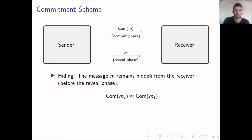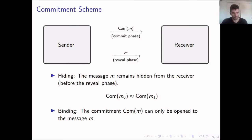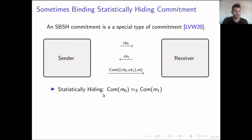We also want the commitment scheme to be binding, meaning after the sender commits to the message M, he can only open to M and cannot trick the receiver by switching messages. Usually, most commitment schemes are either statistically hiding and computationally binding, or computationally hiding and statistically binding. What we use is sometimes binding statistically hiding, or SBSH commitments, where the commit phase takes three rounds of interaction.